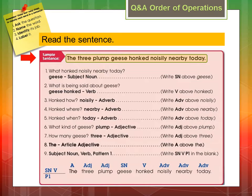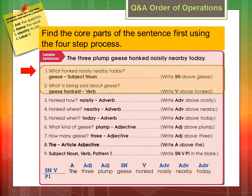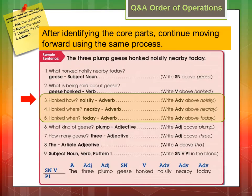Now let's take a closer look at the order of operations using the question and answer flow. Always begin by reading the complete sentence. Then use the four easy steps to identify and label the core parts of the sentence first, as demonstrated in steps 1 and 2. After identifying the core parts of the sentence, continue moving forward using the same process, as seen in steps 3 through 5 of the question and answer flow.